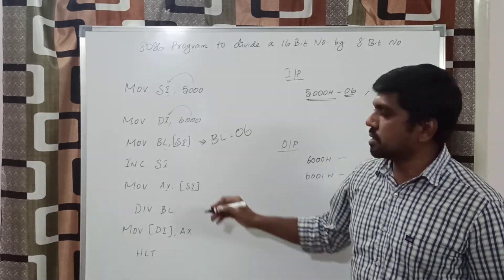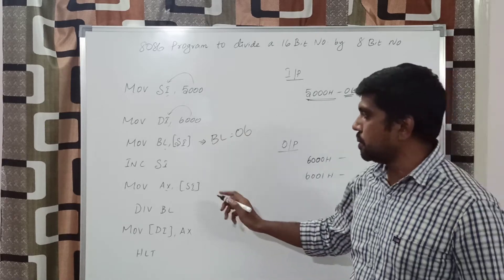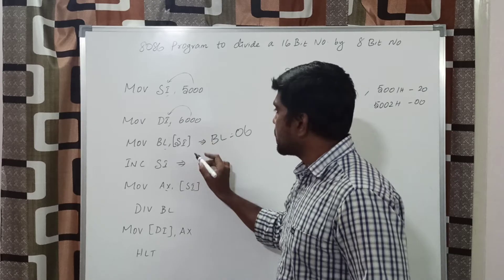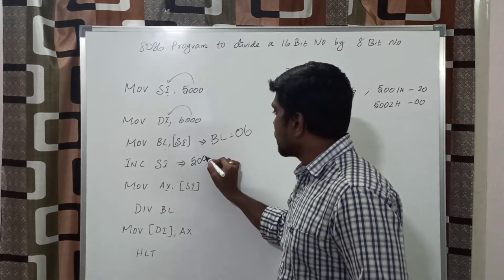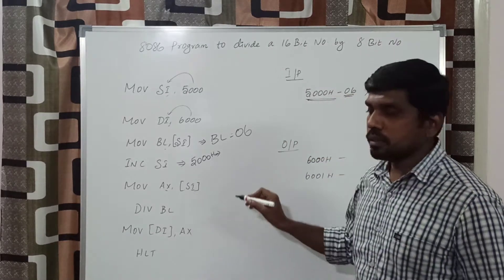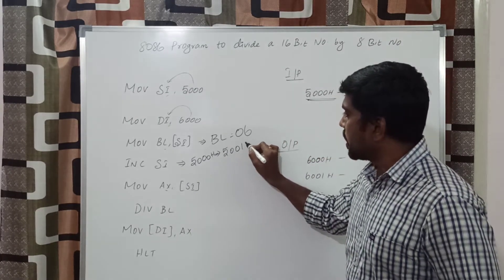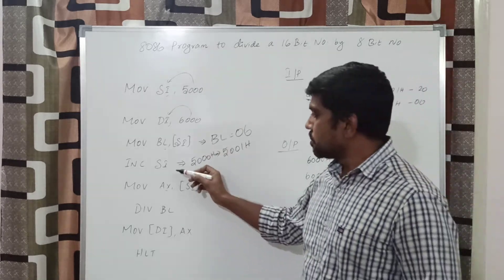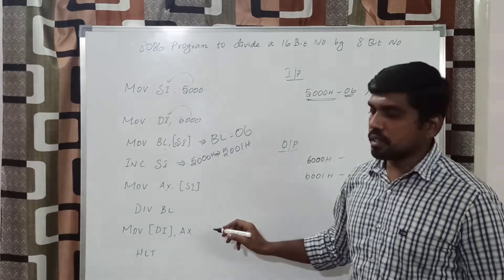Then you increment the SI register because you need to get the 16-bit value. Before execution of this instruction, SI value is 5000h. After execution, you add 1, so now the SI content is 5001h. Then MOV AX, [SI] — now you get the data from 5001h.